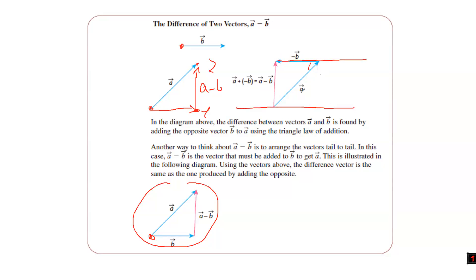Think back to trigonometry or basic geometry — there are these two angles formed by a slicing line through two parallel lines. The angles are equal. That's why you can represent subtraction either way: reverse the vector and add the negative, or keep the initial vector and subtract. On paper, you won't always need to draw these lines — that's why we have calculus.